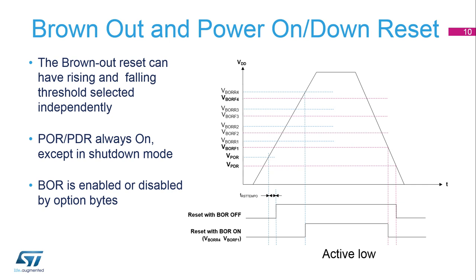When the BOR is enabled, four BOR levels can be selected through option bytes with independent configuration for rising and falling thresholds. The backup domain reset occurs when the BDRST bit is set in the RCC backup domain control register. It also occurs when VDD and VBAT are powered on if both supplies have previously been powered off. It resets the RTC and TAMP registers, the backup registers, and the RCC backup domain control register.